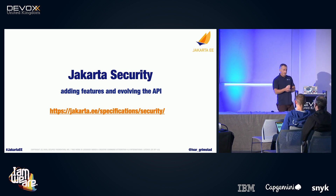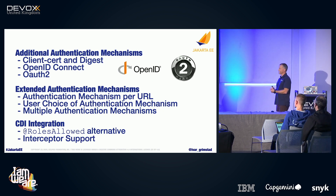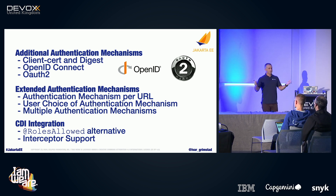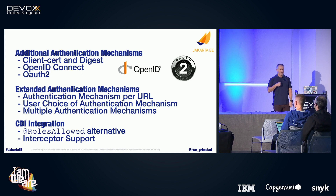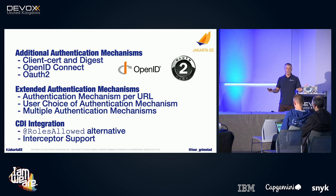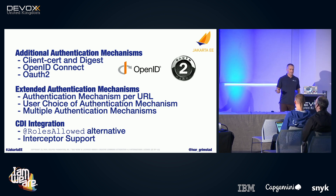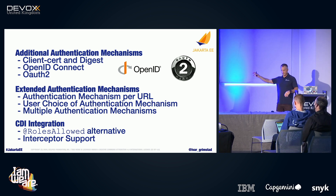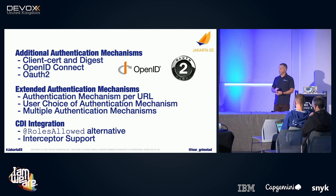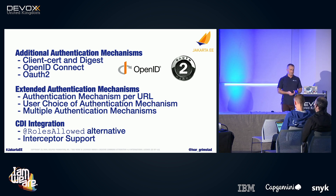Jakarta Security is not part of core profile, but it will add features for the web profile and platform. The plan is to add support for OpenID Connect and OAuth 2, as well as making it possible to use multiple authentication mechanisms — for example, a web UI using one mechanism and another part of the application using a different authentication mechanism, all configured within the application. This is stuff that any developer securing their application will be happy about.